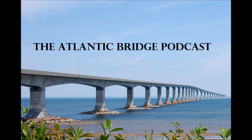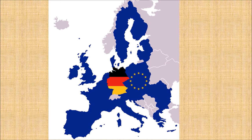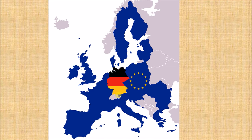In this first image you can see the European Union in blue and Germany in its national colors. I am living in this region, the southwestern tip of Germany in the state of Baden-Württemberg, right in the vicinity of its state capital of Stuttgart.